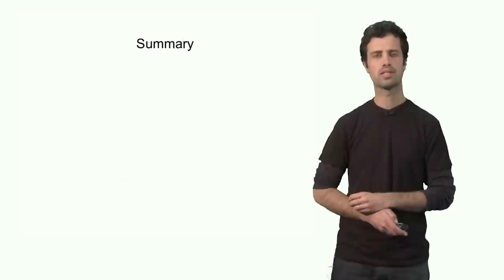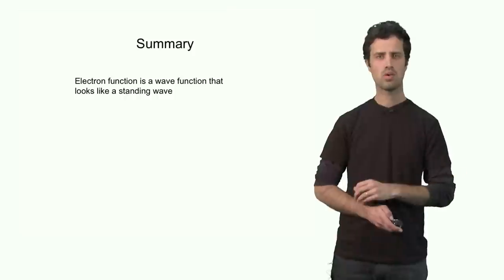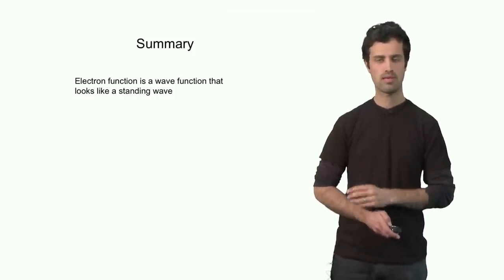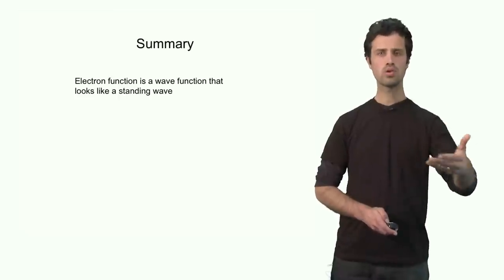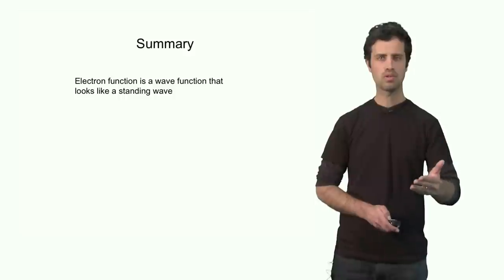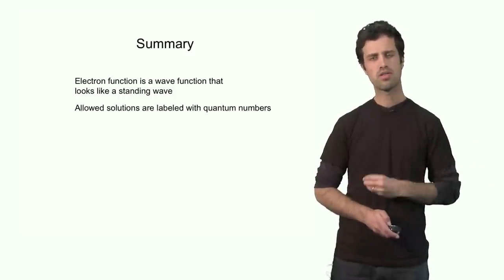So let's summarize this. We have seen that the electron function behaves like a standing wave, and therefore is called a wave function. And we have seen that there are allowed solutions of these wave functions. These allowed solutions are labeled with a quantum number. Because the atom is a three-dimensional object, we need three quantum numbers to fully describe the wave function in three dimensions.